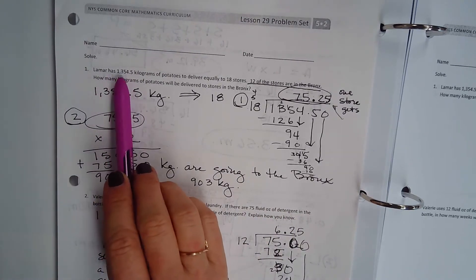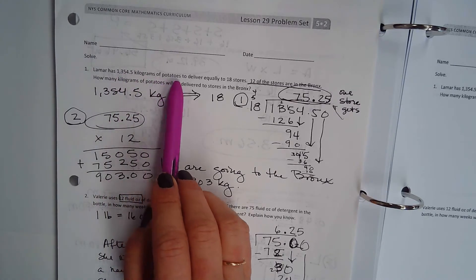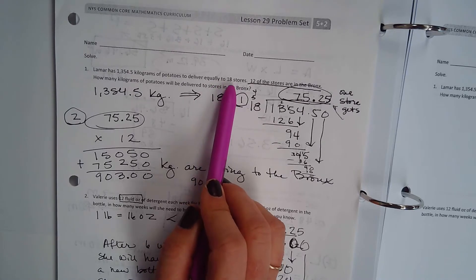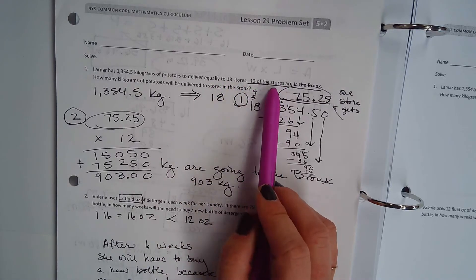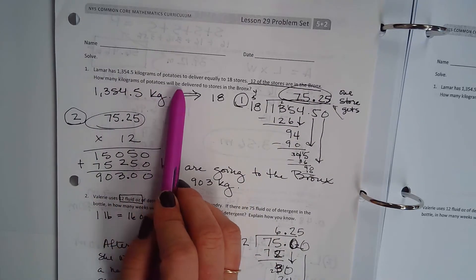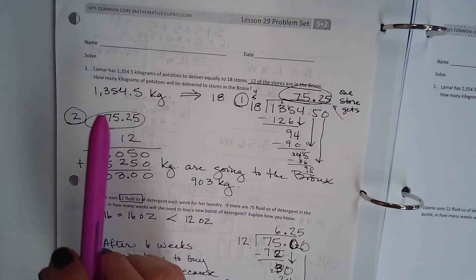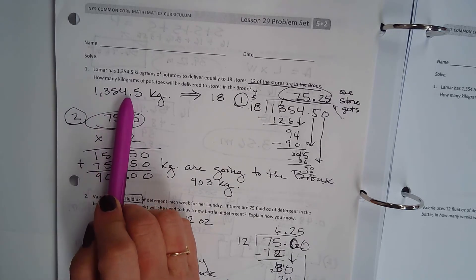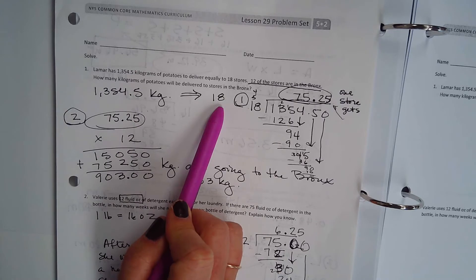Lamar has 1,354.5 kilograms of potatoes to deliver equally to 18 stores. Twelve of the stores are in the Bronx. How many kilograms of potatoes will be delivered to stores in the Bronx?